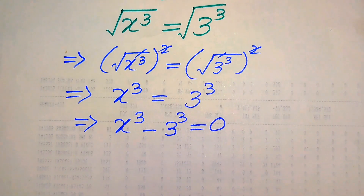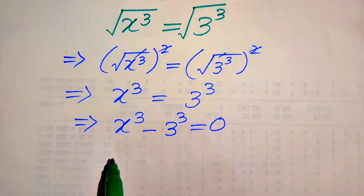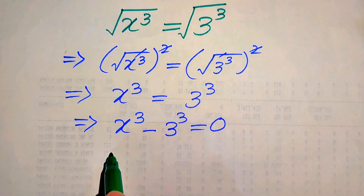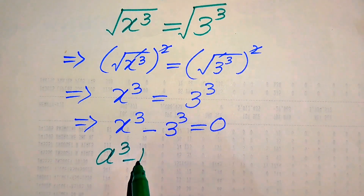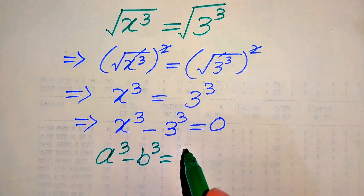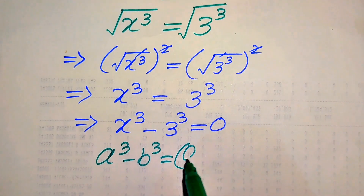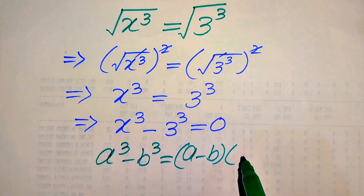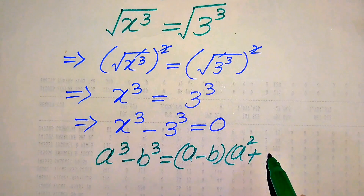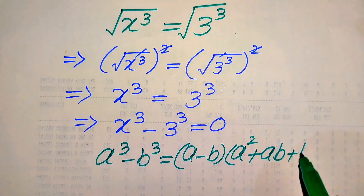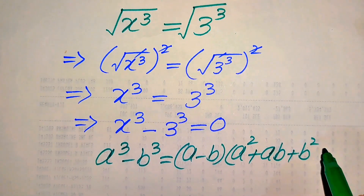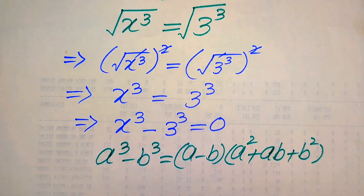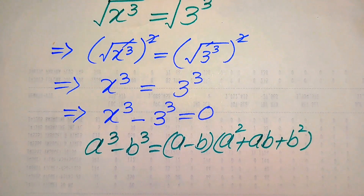In order to solve this equation, we need to use the cubic difference formula. You know about this formula: if we have a cubed minus b cubed, it equals a minus b, times a squared plus ab plus b squared. We will apply this formula to our equation.